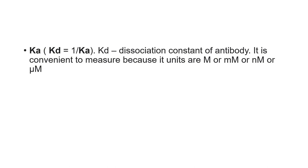In laboratories, the association constant is measured in terms of the dissociation constant KD, because it is convenient — its units are molar, millimolar, nanomolar, and micromolar. KD equals 1 divided by Ka. It is a quantitative indicator of the stability of the antigen-antibody complex. A very stable complex will have a very low KD value, meaning very little dissociation, while less stable complexes will have higher values of the dissociation constant.